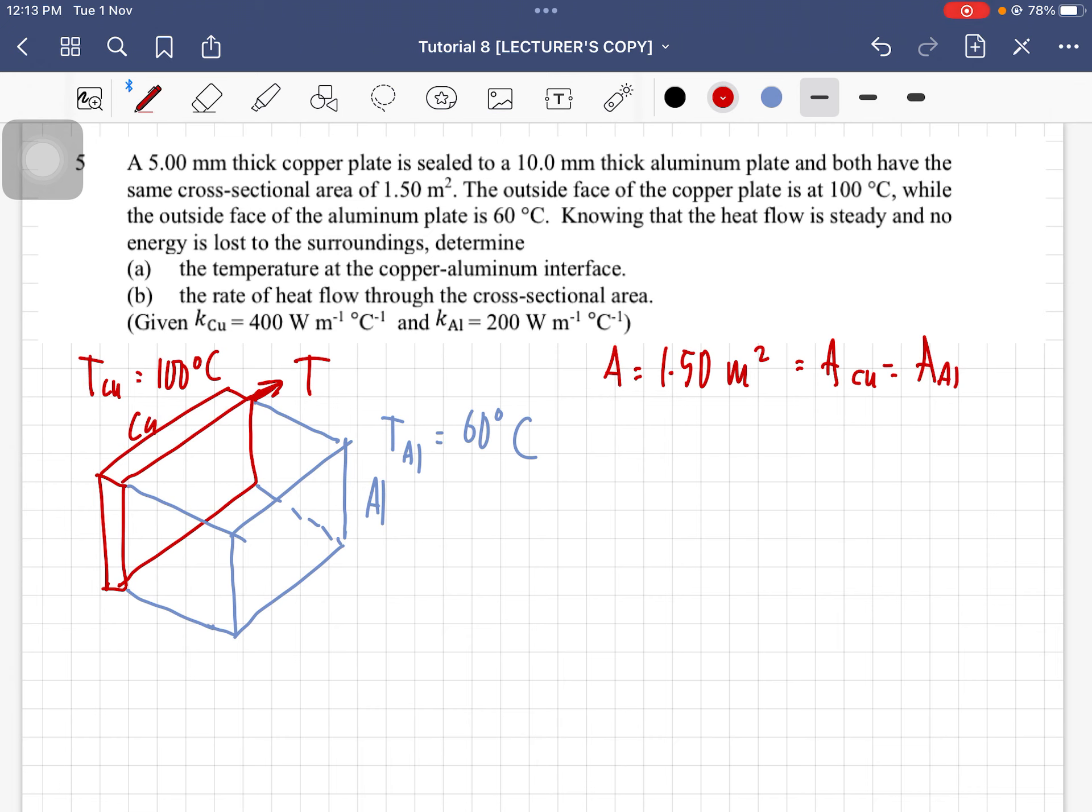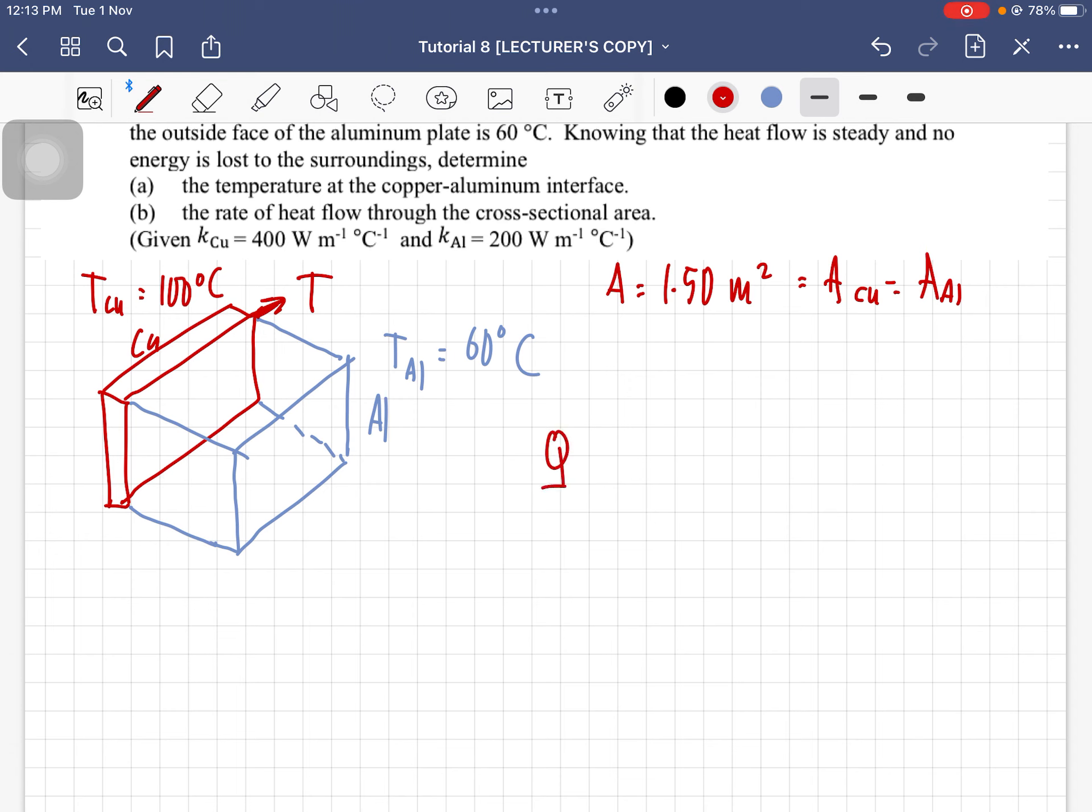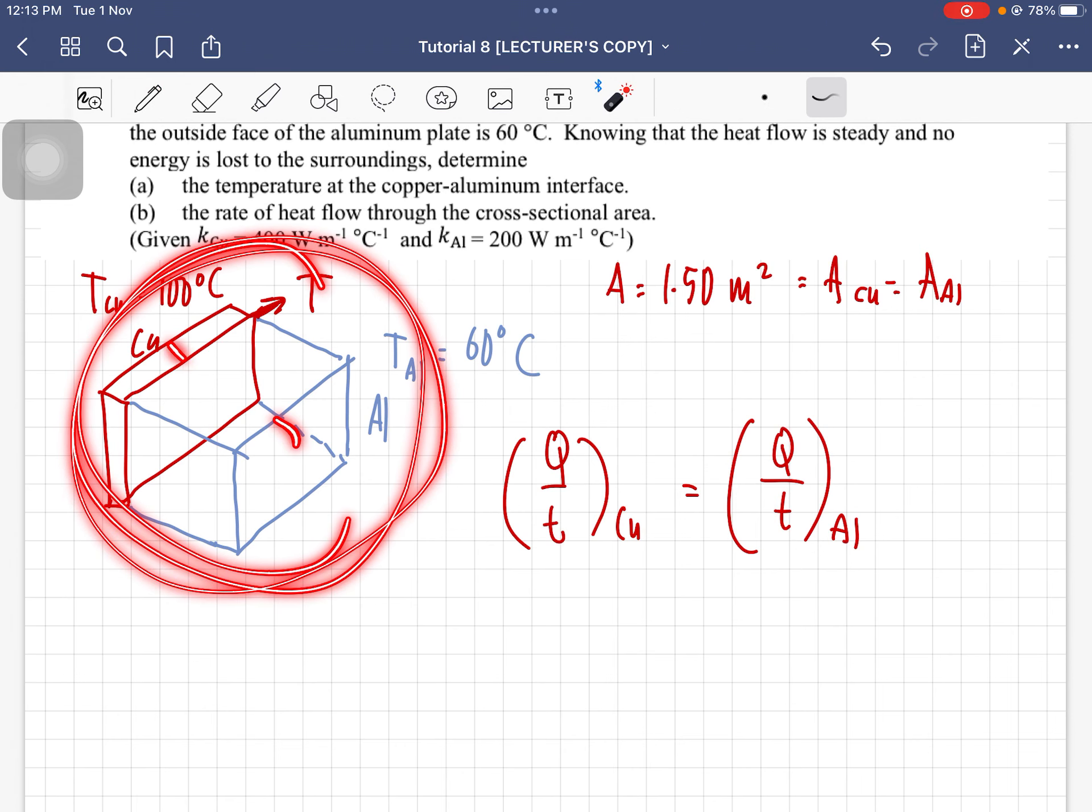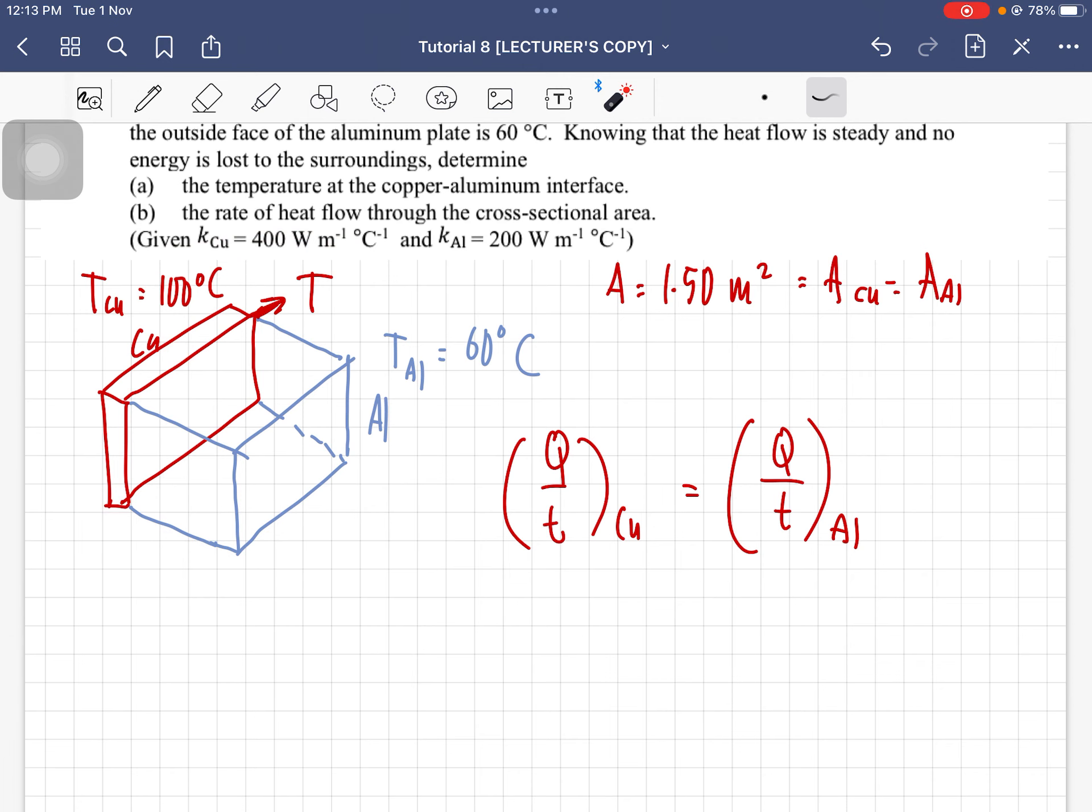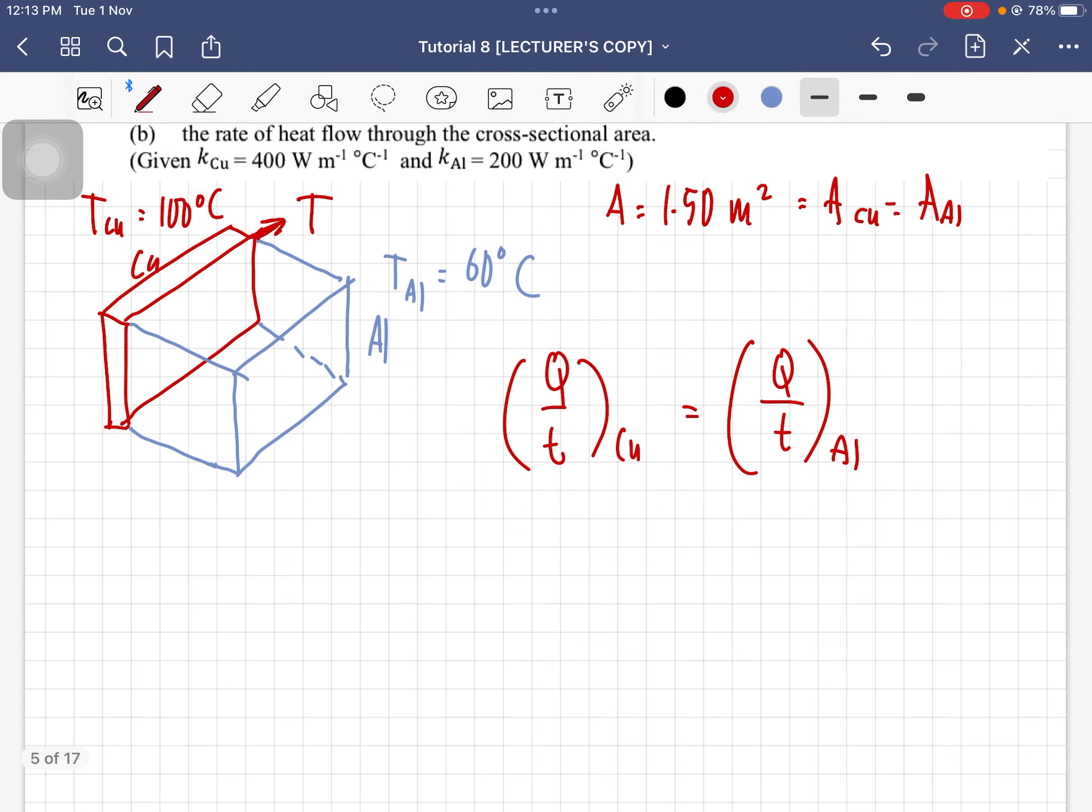When the question mentions that the flow of heat is at steady state, or the heat flow is steady, what we can do is say that the rate of heat transfer between copper and this aluminum plate should be equal. Always remember that at steady state, the rate of heat flow between two materials should be equal.